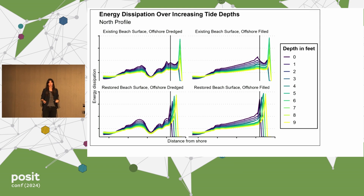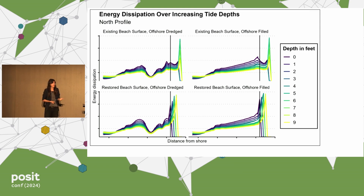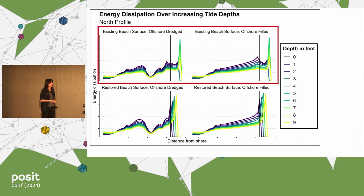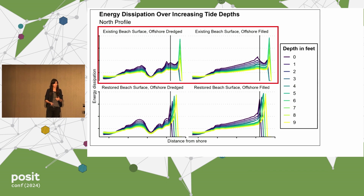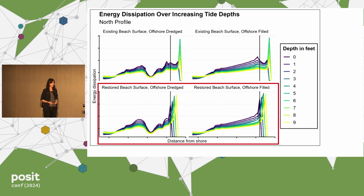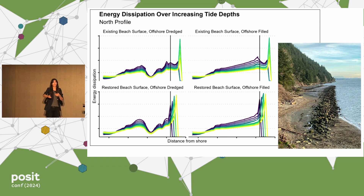Across those profiles we can extract anything we want. This is energy dissipation again across our two profiles. On the top set of graphs, we have the existing beach surface — you can see that the high peak of energy dissipation is happening really close to shore, right on those sensitive onshore structures. On the bottom, when we fill in the restored beach surface, that energy is shifted offshore. We can never destroy the energy, but we can move it somewhere else. That vertical black line is a reference point for those rocks from the earlier image — the old sidecast fill. We can see that the energy dissipation is being moved away, and this was the selling image for our client to convince them that natural restoration is an option.